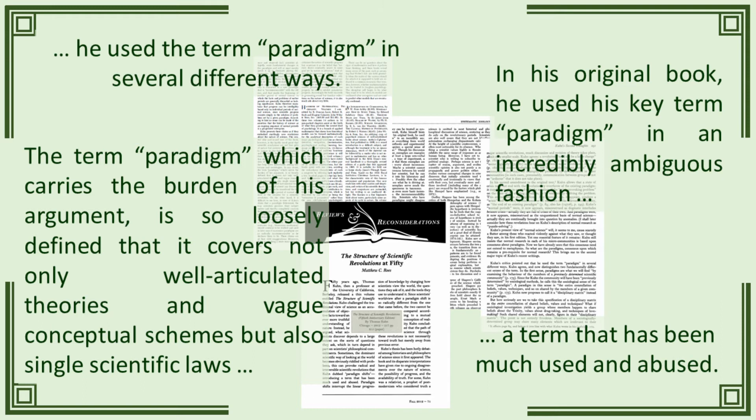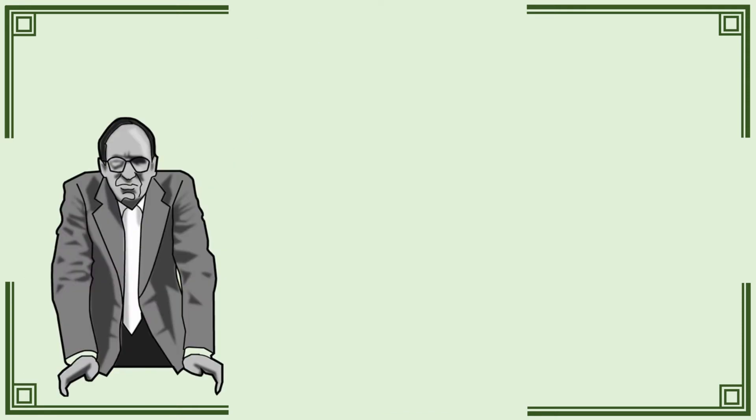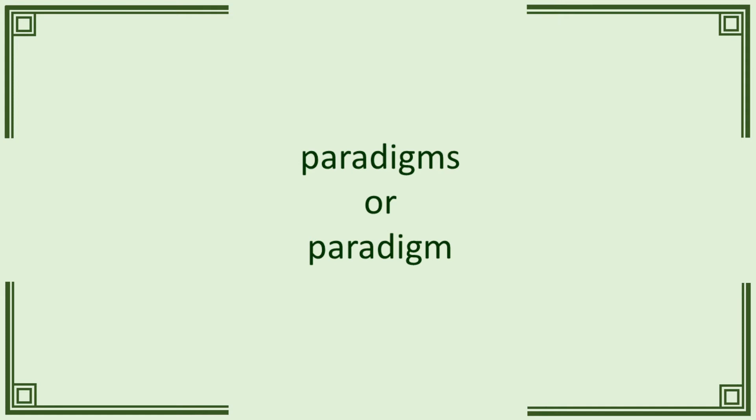There is one final note worth making. Whenever Kuhn speaks about paradigms in the abstract, it is usually plural. But particular historical examples tend to be singular. This creates a disconnect. Structure clearly implies that any particular scientist operates under the influence of multiple intersecting paradigms at any one time. But the impression given by examples, and this is how it is usually read, is that each scientific field is dominated by a single all-encompassing paradigm at any moment.